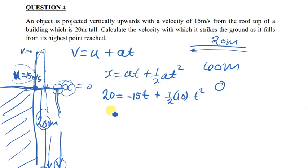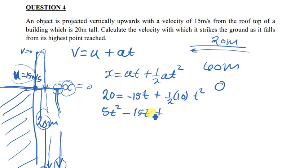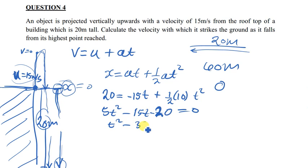When you simplify this, you get 5t² - 15t - 20 = 0. When 20 comes to the other side of the equal sign it becomes minus 20 equals zero. We simplify this expression by dividing everything by 5, giving t² - 3t - 4 = 0. So we solve the quadratic equation.